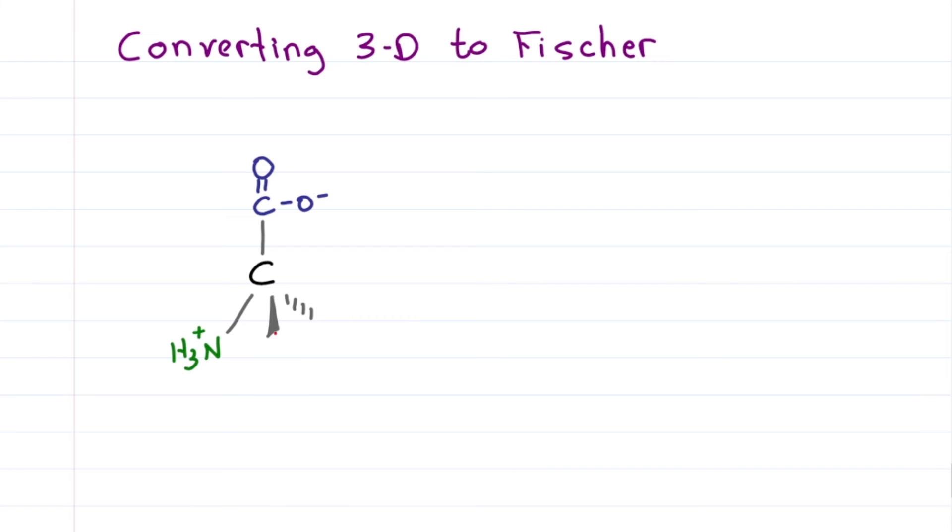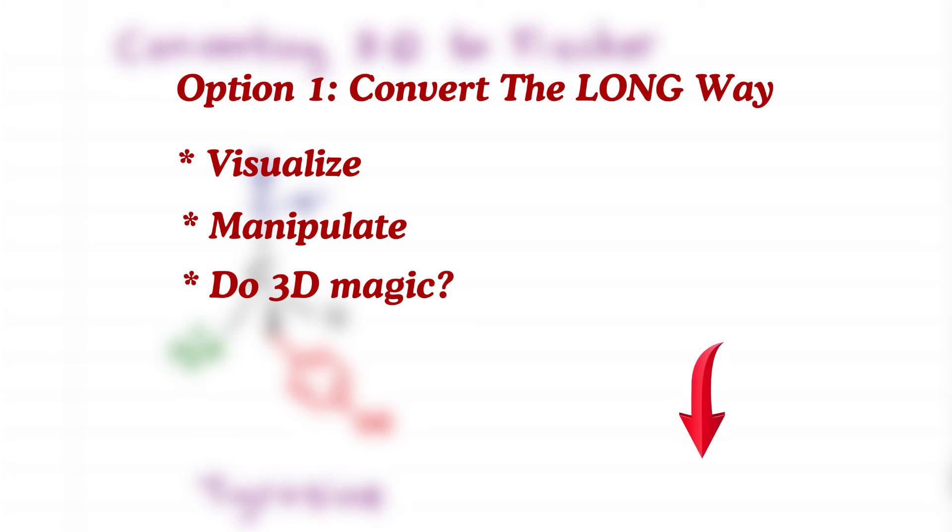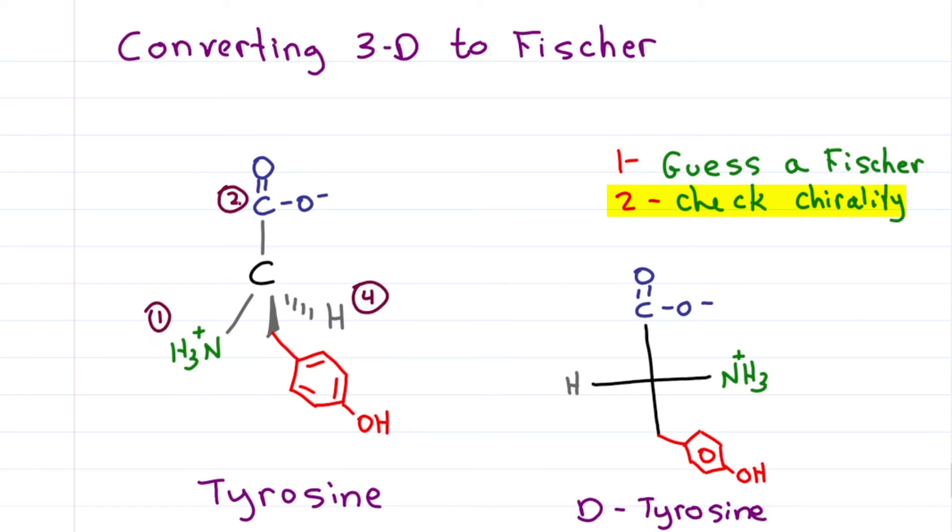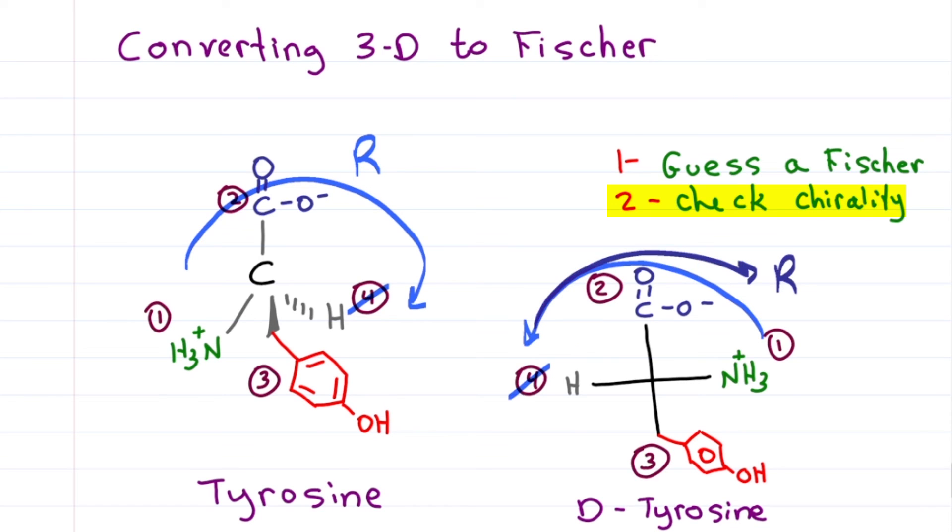Can you convert this tyrosine to a Fischer projection? Option one, convert it the long way. Visualize, manipulate, do 3D magic? Let me know in the comments if this is how you learned it. Or option two, guess and check. First, guess a Fischer. Two, check if you guessed right, and if not, fix it. So let's guess D and let's check. Our 3D tyrosine is R. D tyrosine is also R. We guessed correctly.